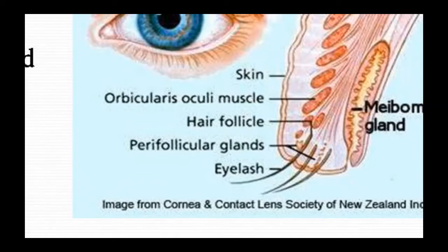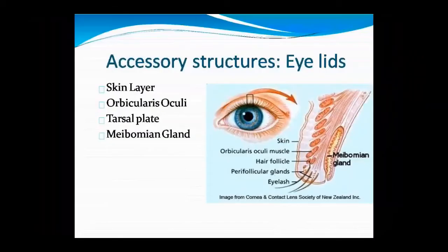The long red structure is the orbicularis oculi muscle. You can see hair follicles. Peripollicular glands are shown in the eye follicles which make your eyelashes. So these are the four accessories of the eyelid: skin layer, orbicularis oculi, tarsal plate, and meibomian gland.